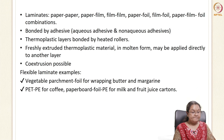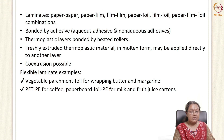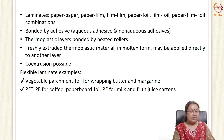Foil acts as a barrier material with good aesthetic attraction. Laminates can be paper/paper, paper/film, film/film, and foil combinations. These are generally bonded using an adhesive — aqueous (water-soluble) or non-aqueous. They can be developed into thermoplastic layers through heated rollers, extruded, molded to different forms, or co-extruded. Examples include vegetable parchment paper and foil for wrapping butter and margarine, and PET/PE laminates for coffee, and paperboard/foil/polyethylene for milk and fruit juice cartons.